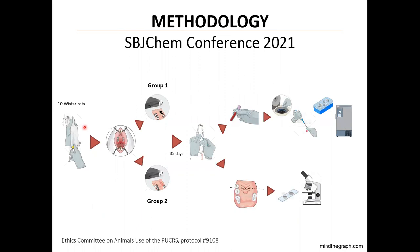Ten Wistar rats were submitted to tooth extraction under general anesthesia. Five animals received bone graft inside the socket and were classified as group 1. The remaining animals did not receive bone graft and were classified as group 2. After 35 days, the animals were euthanized, the blood was collected and centrifuged and processed for analysis. The maxilla were collected and processed for histological analysis.